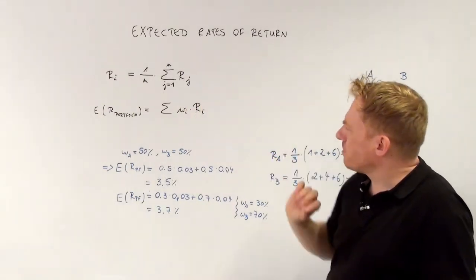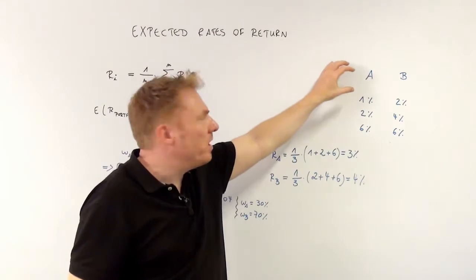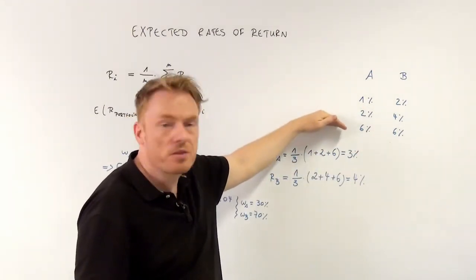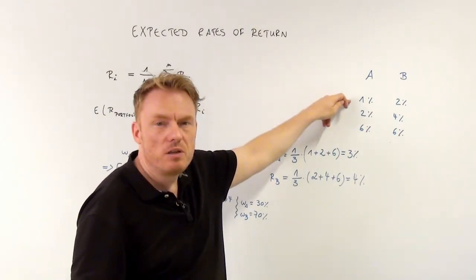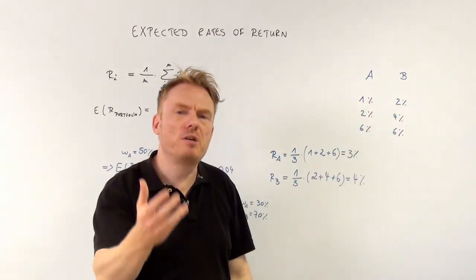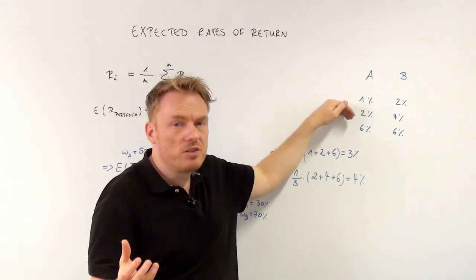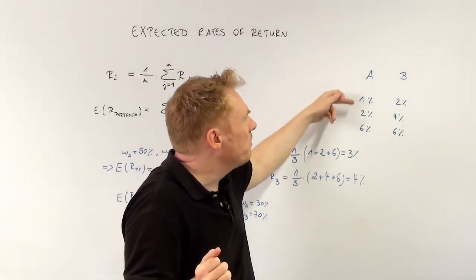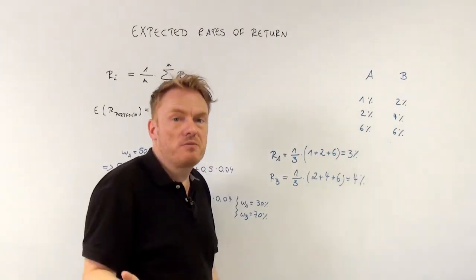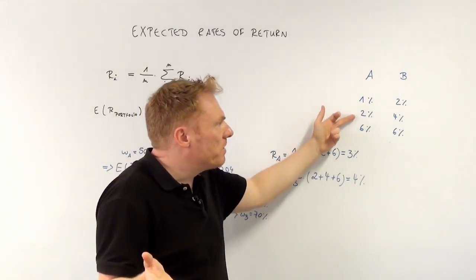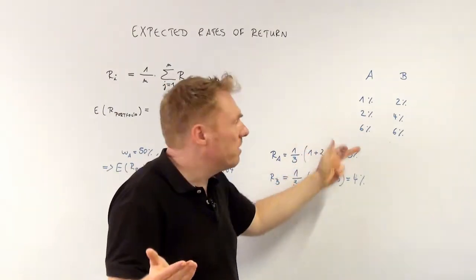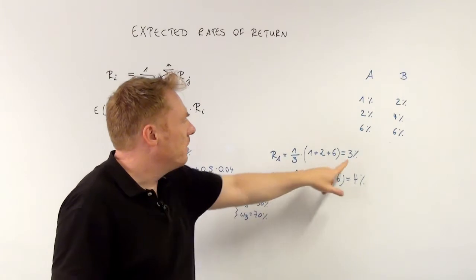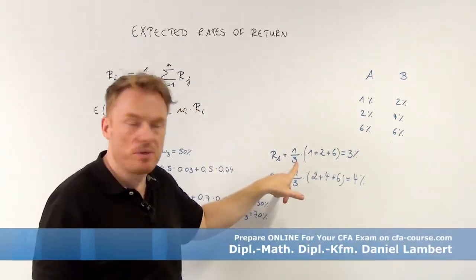As we see here, we have two different shares. In the first month, we have a return of 1% for share A and 2% for share B. In the second month the situation is different, and so on. So the expected return for share A is 1 plus 2 plus 6 divided by 3, because there are three different situations. That gives us 9 divided by 3, which is the expected return of share A: 3%.